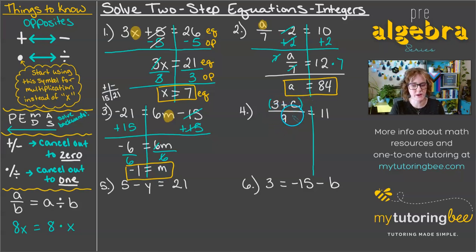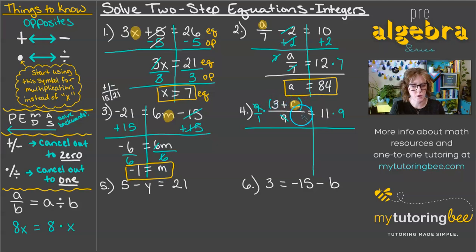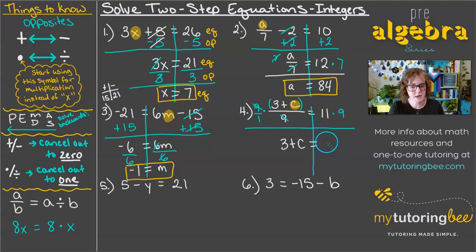All of this is being divided by 9, and we're working on the left side because that's where our variable is. To undo that division of 9, we multiply by 9 — you can write it as a fraction if you like — and this 9 and this 9 cancel out. So now we just have 3 plus C over 1, which is just 3 plus C. And then on the other side, 11 times 9 is 99.